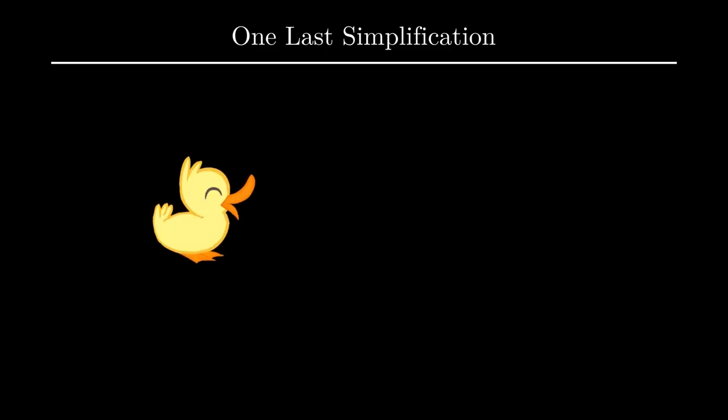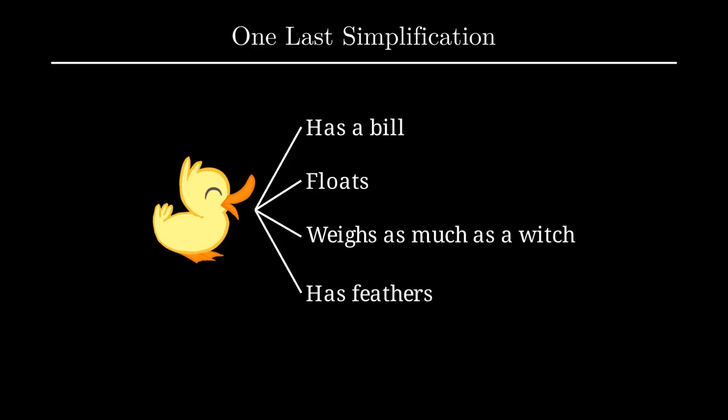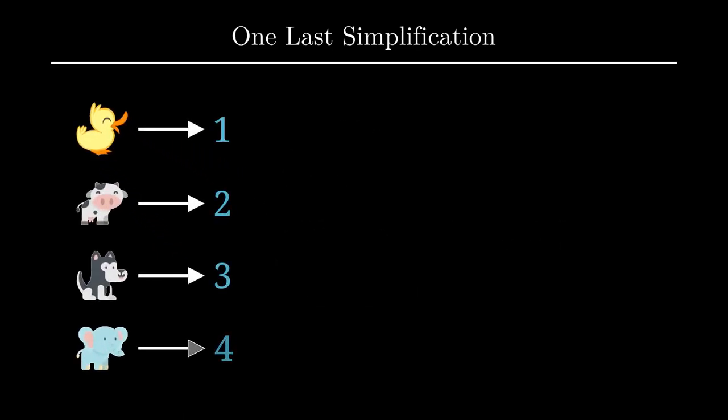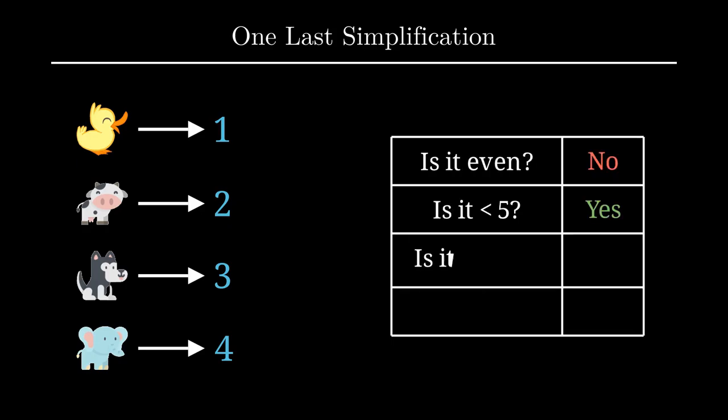We don't want to have to worry about the specifics of which animals have which traits, and we don't want to have to break out the biology textbooks and search for stupidly specific questions to ask either. So let's say we take every animal and give it a number. Then we could just ask our questions about the numbers instead of the animals assigned to them. Once we find the correct number, then we simply refer to our assignments and we know the animal.